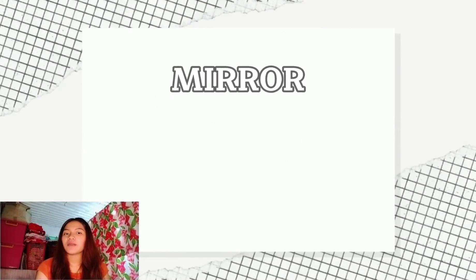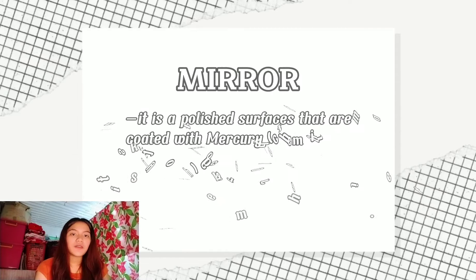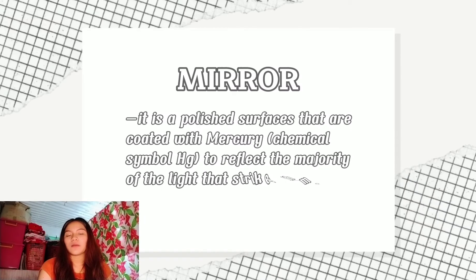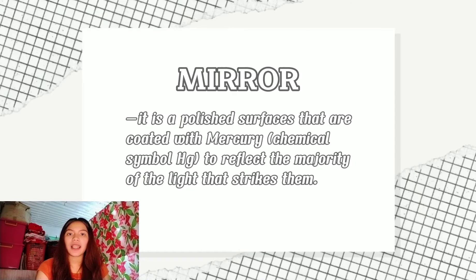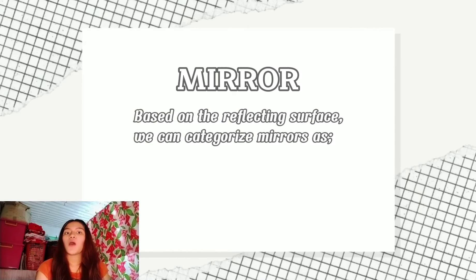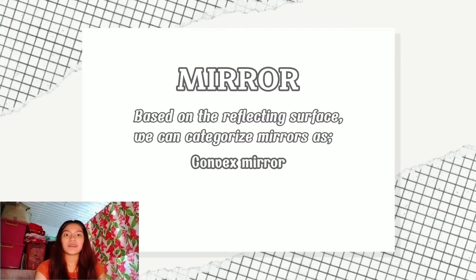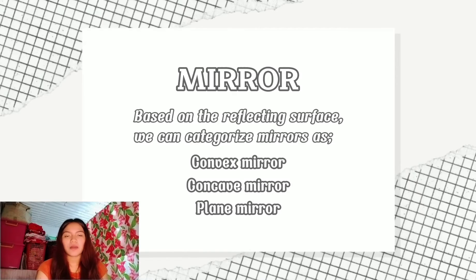When a ray of light strikes a regular surface, the majority of it is absorbed. As a result, we can define mirrors as the polished surfaces that are coated with mercury — chemical symbol Hg — to reflect the majority of the light that strikes them. Based on the reflecting surface, we can categorize mirrors as convex, concave, or plane mirrors.